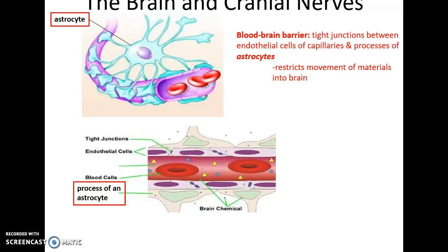The blood-brain barrier exists between the astrocytes — a specific type of neuroglial cell of the nervous system — and the blood capillaries found in most of the brain tissue. The astrocytes send out processes that wrap around the blood capillaries and help to restrict the movement of materials into the brain.